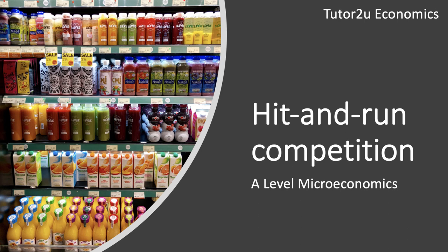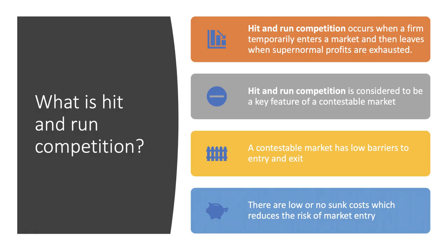This short video explains the concept of hit and run competition and looks at some topical examples. Hit and run competition is a concept you'll come across when you study contestable markets. It occurs when a business temporarily enters a market or a segment of a market, and then leaves when they think the supernormal profits — the abnormal profits — have been exhausted.